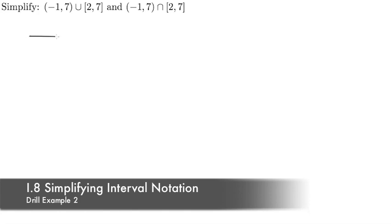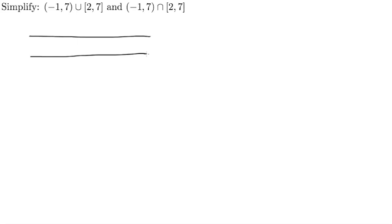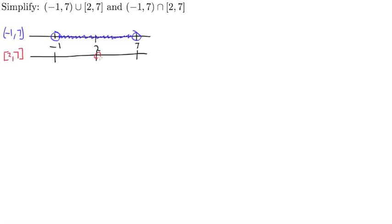Let's consider another example. Our two intervals are (-1, 7), both open brackets, and [2, 7], both closed brackets. Here we have three values to work with: negative 1, 2, and 7. For the first interval, negative 1 to 7, I'll put open circles at both endpoints and shade all values in between — representing everything between negative 1 and 7, not including the endpoints. For the second interval, 2 to 7 inclusive, I'll put closed dots at 2 and 7 and shade in between.